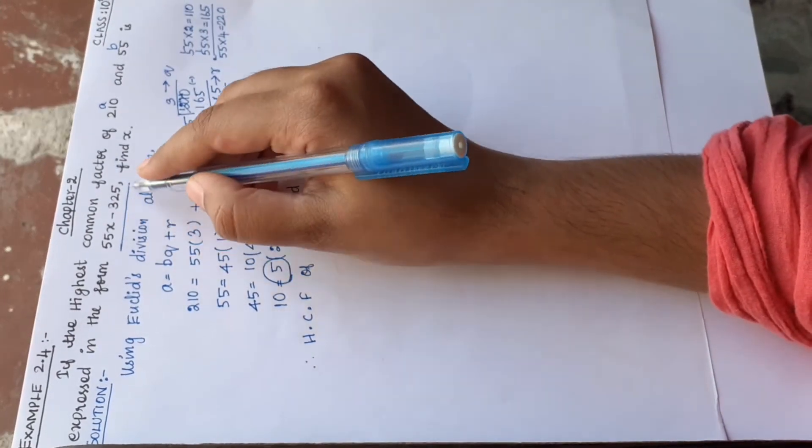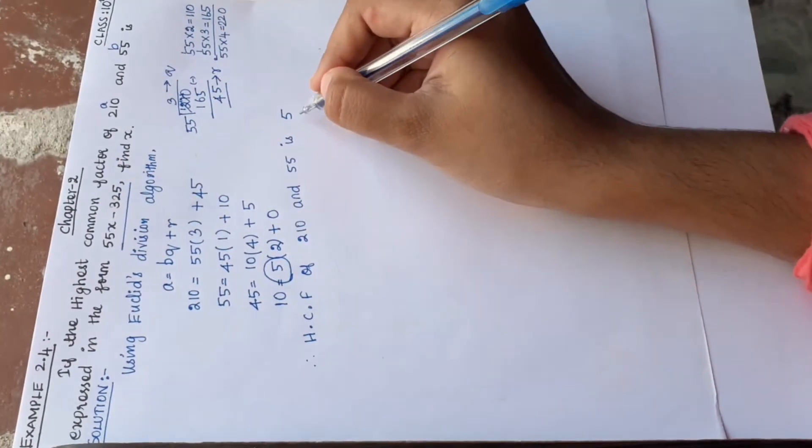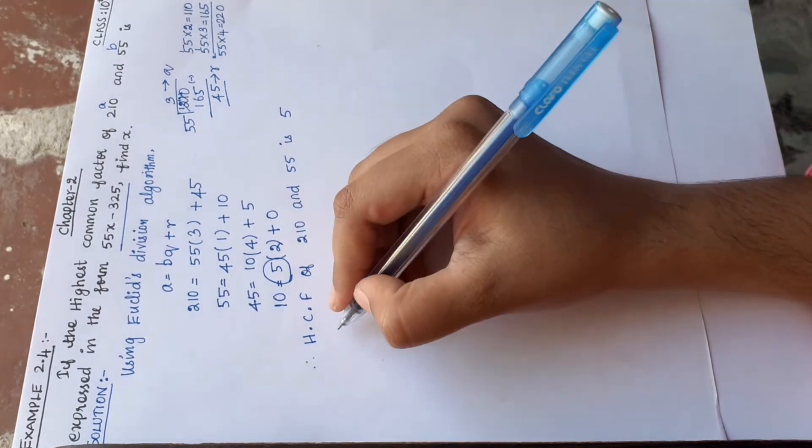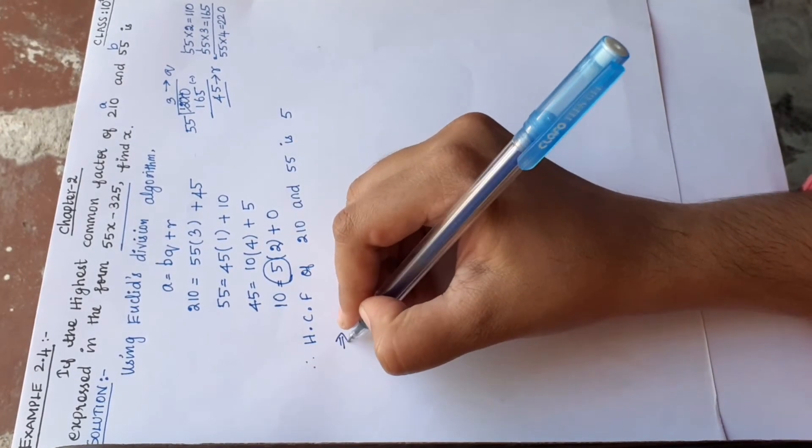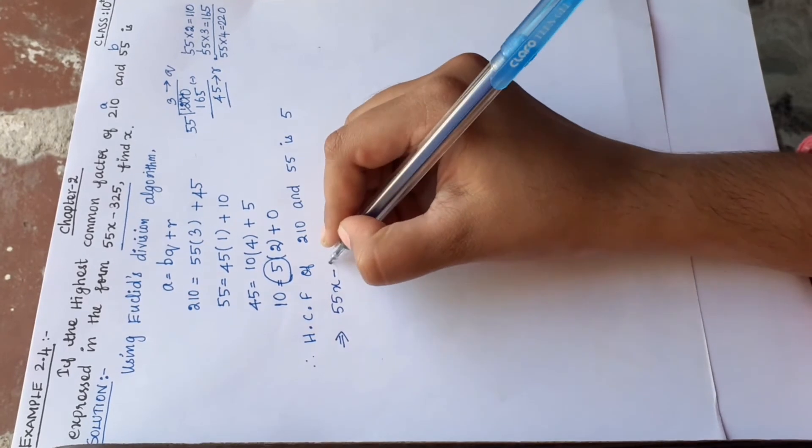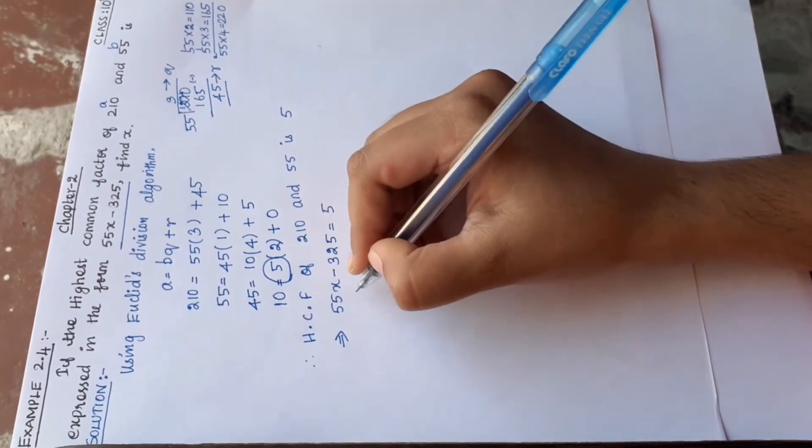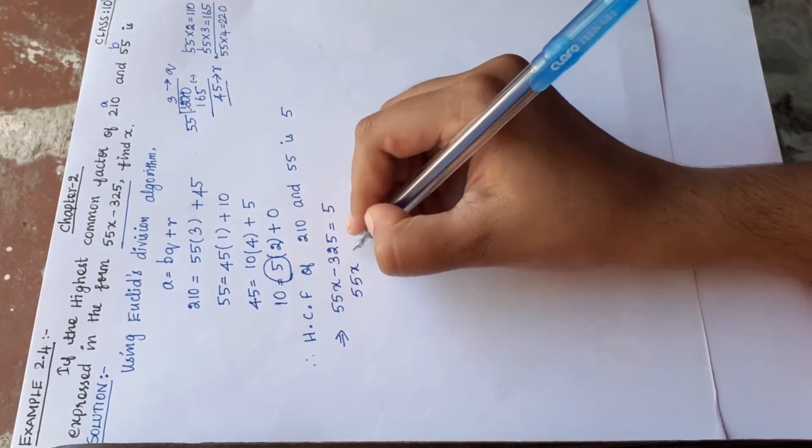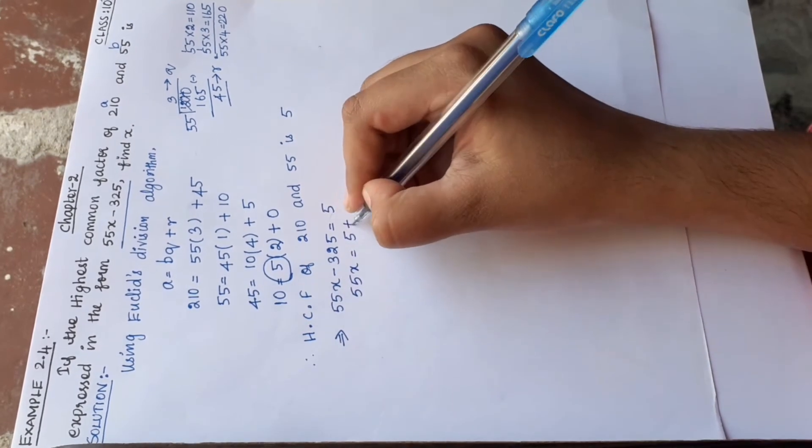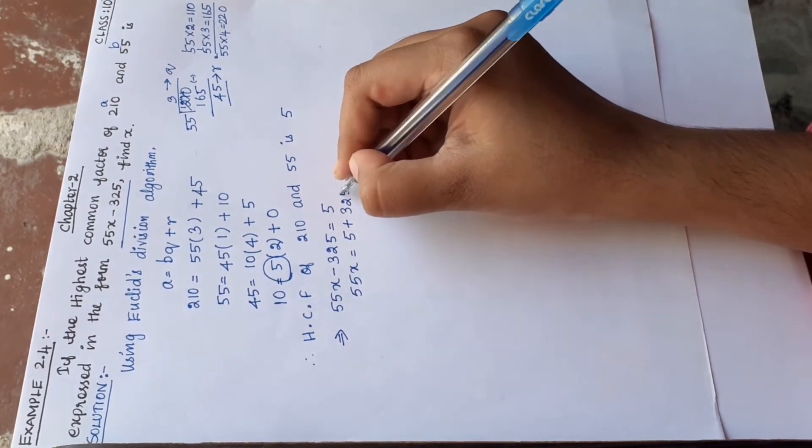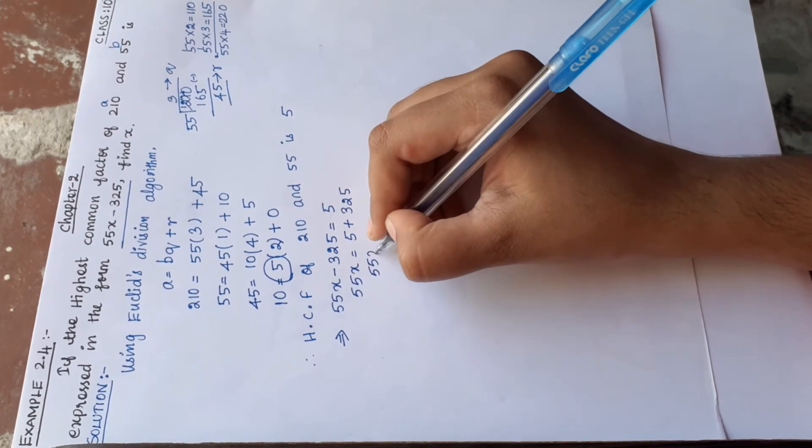The question states it is expressed in the form 55x - 325, so find x. We equate: 55x - 325 equals 5. Therefore, 55x equals 5 plus 325, which equals 330.